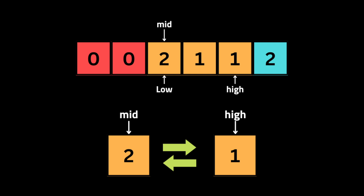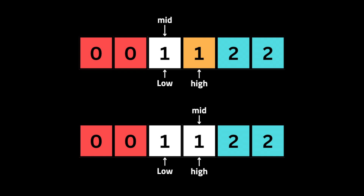This process repeats — when a zero is at the correct place, we move the low and middle pointers by one position. If the middle pointer points to value two, we swap it with the value at index high to ensure all twos go to the end, then move the high pointer back. When the middle pointer points to value one, we don't need to swap anything since one is already in its correct place — we just move the middle pointer by one. It's like partitioning an array into three sections using one as the pivot. Once the middle pointer becomes greater than the high pointer, we stop the loop.